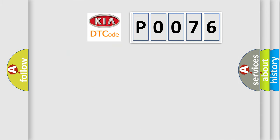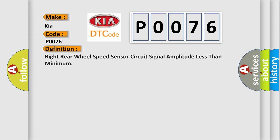So what does the Diagnostic Trouble Code P0076 interpret specifically for KIA car manufacturers? The basic definition is: Right rear wheel speed sensor circuit signal amplitude less than minimum. And now this is a short description of this DTC code.